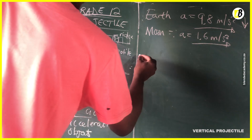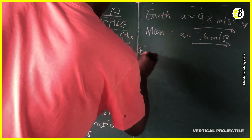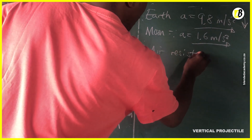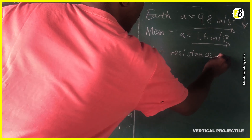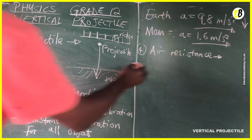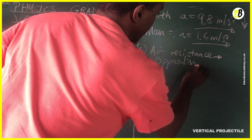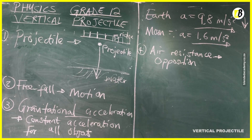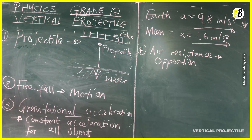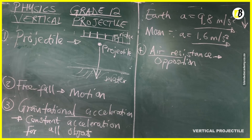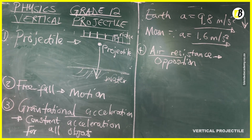Air resistance is the opposition force to the motion of an object as it falls due to gravity. In real life there is resistance to that motion, but when solving problems involving vertical projectile motion, you must ignore air resistance unless the problem specifically states otherwise.